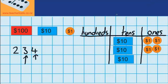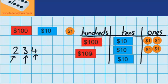And last of all, you can see that 234 has got two $100 notes. So let's move those $100 notes across. There's one and two. So now you can see that 234 is made up of two hundreds, three $10 notes, and four $1 coins.